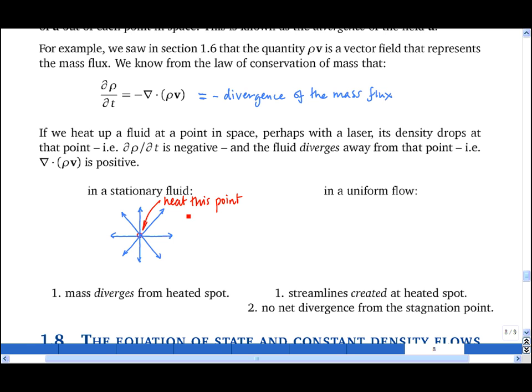And if this happens, streamlines are created at this point. And you can see why the operator del dot a vector field is called the divergence of that vector field.